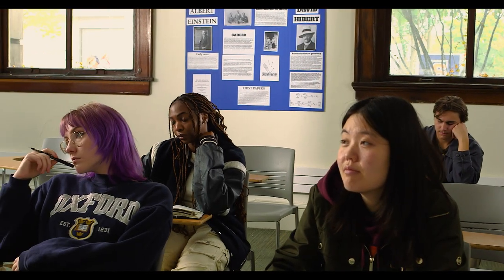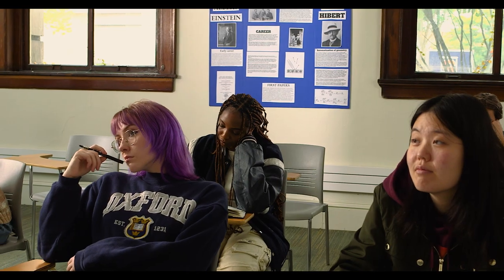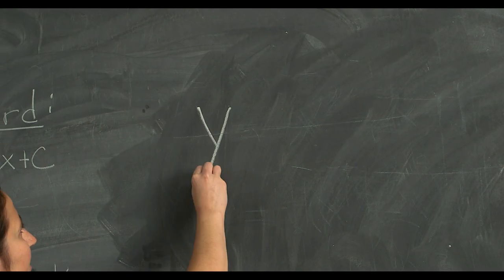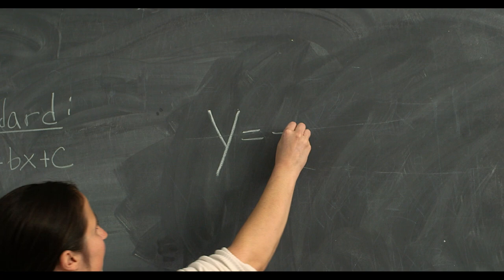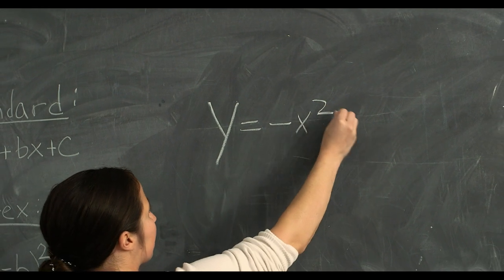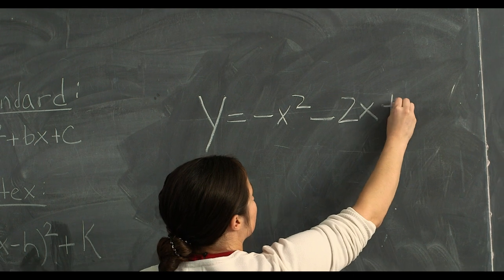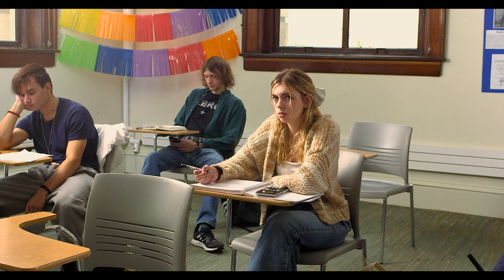Now that we have our three equations, let's practice doing some conversions. We're going to do this by using our first question on our homework assignment, which gives us the equation y equals negative x squared minus 2x plus 1. We need to convert it into vertex form, and then it asks us for the vertex point and the y-intercept.